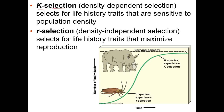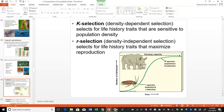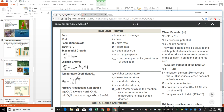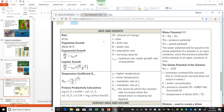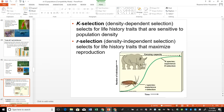What you really need to know is K selection versus R selection. K selection should sound like something you already know — carrying capacity. K is your carrying capacity, and it's right on the cheat sheet. On the cheat sheet we have exponential growth and logistic growth. K is carrying capacity and R is the growth rate of the population. K selection has to do with carrying capacity, whereas R selection has to do with maximum growth.